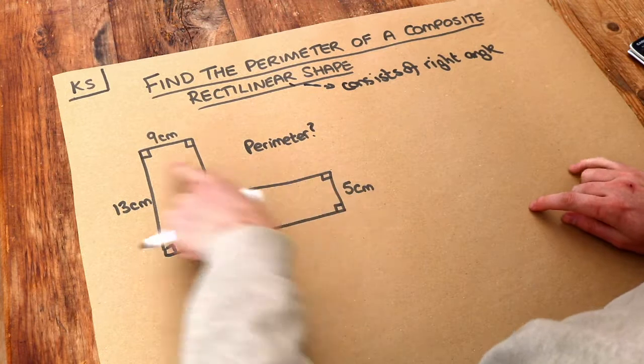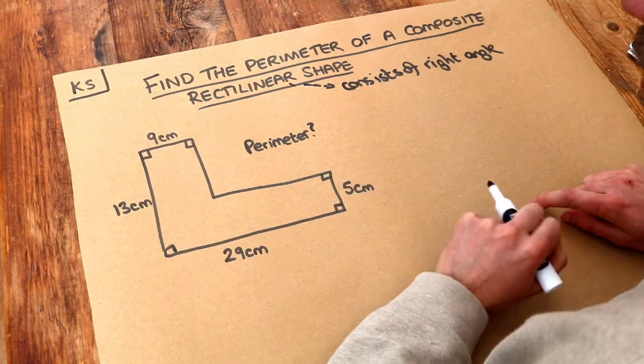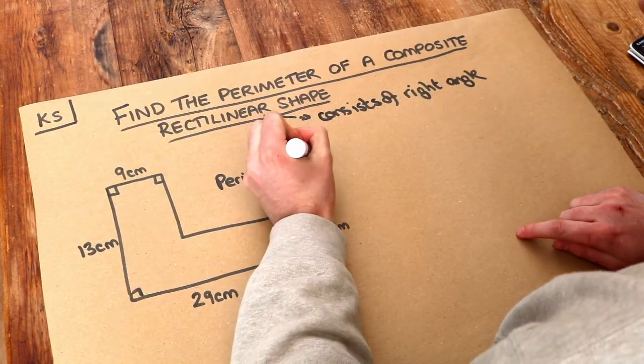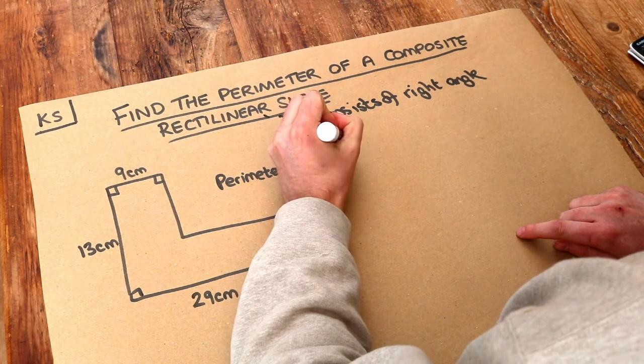And we want to find the perimeter of this shape. So remember the perimeter means the total length around the outside of the shape.